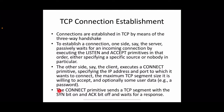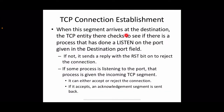In the connect request, SYN will be one but ACK will be zero. The reply back from the server to the client will have both SYN and ACK set to one. When the TCP segment arrives at the server, the TCP entity checks to see if there is a process that has done a listen on the port given in the destination port field.